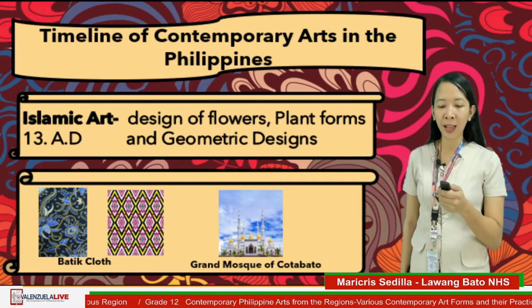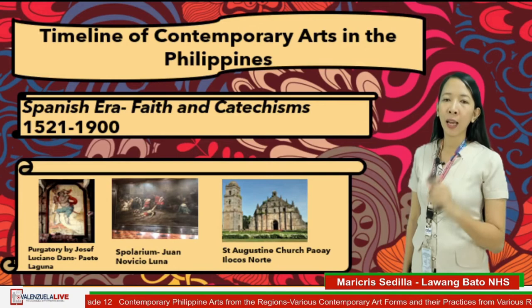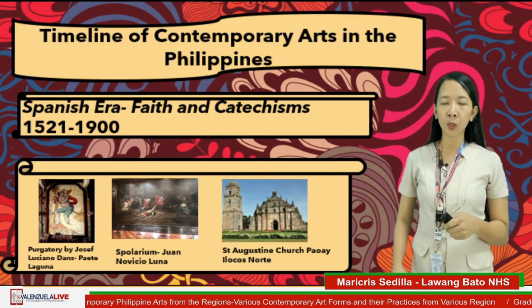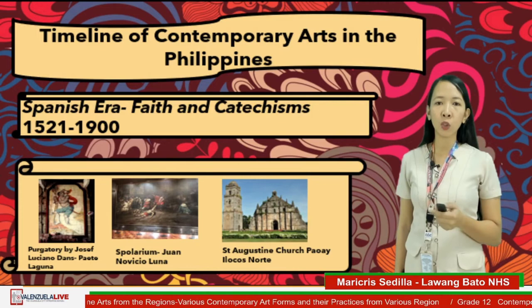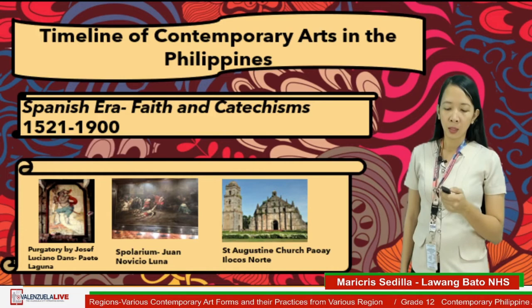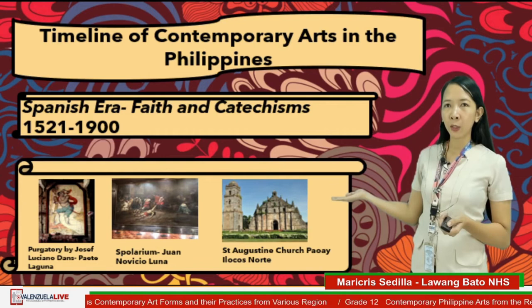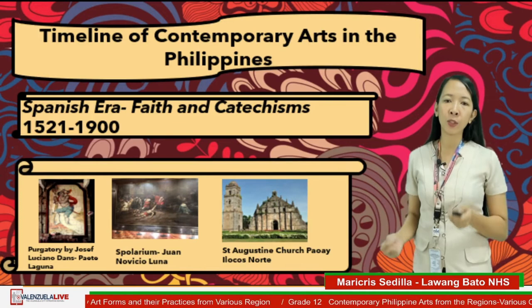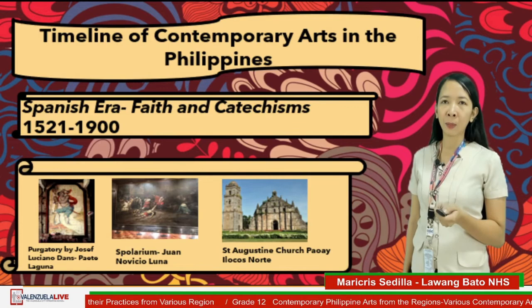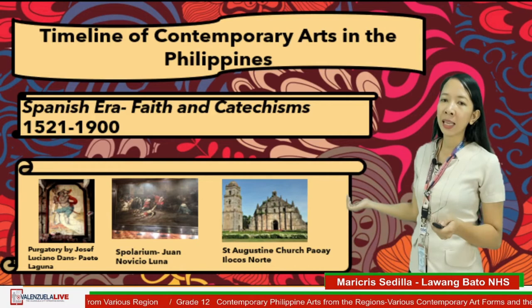The next era is Spanish art, from 1521 to 1898. The characteristic of Spanish art was faith and fanaticism. Examples include the purgatory painting by Joseph Luciano Vance found in Paete, Laguna; the Spoliarium painted by Juan Novicio Luna; and the St. Augustine Church found in Paoay, Ilocos Norte.